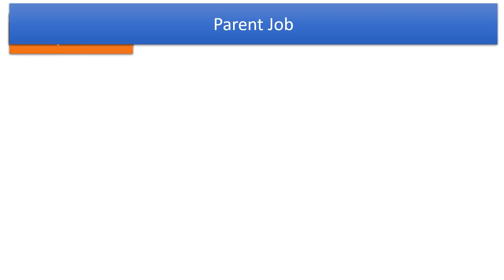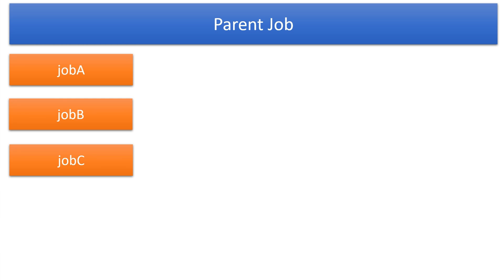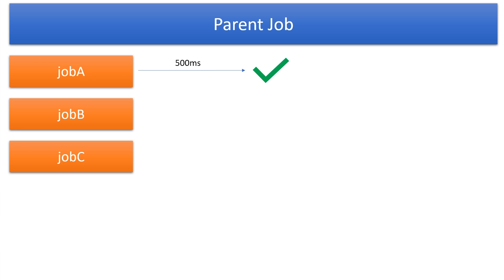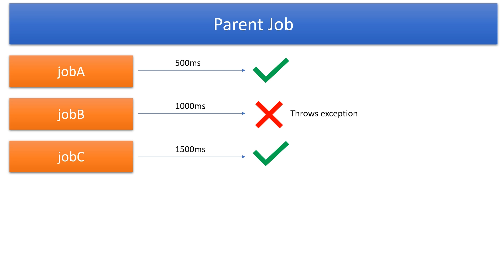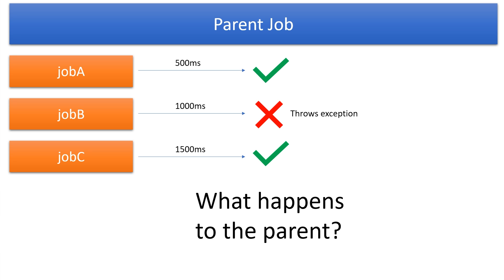I'm going to paint out four scenarios. Suppose you have one parent job that launches three children jobs: job A, job B, and job C. In the first scenario, job A completes successfully — say in 500 milliseconds — but job B throws an exception, and job C also completes. The question is: how does that affect the parent? If some jobs complete successfully but some throw exceptions, how does that affect the other jobs and the parent?